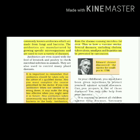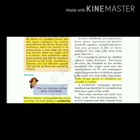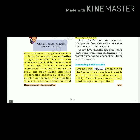Edward Jenner discovered the vaccine for smallpox in 1789. In your childhood, you must have been given injections to protect yourselves against several diseases. Can you prepare a list of these diseases? It is essential to protect all children against these diseases. You might have seen advertisements on TV and newspapers regarding protection of children against polio under the Pulse Polio Programme. Polio drops given to children are actually a vaccine. A worldwide campaign against smallpox has finally led to its eradication from most parts of the world.